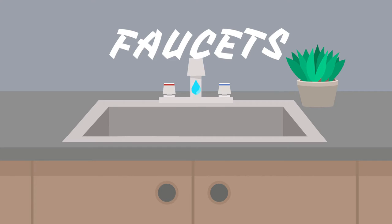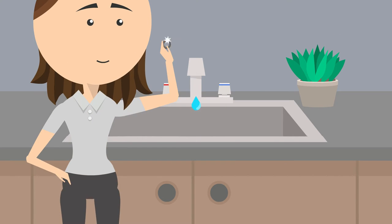Faucet leaks are usually caused by worn washers or O-rings. If you have a drippy faucet or shower head, install new seals from your hardware store.